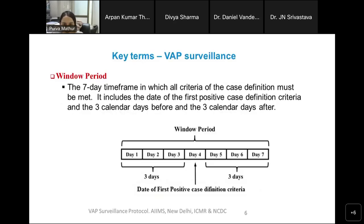We talked about the window period yesterday in all three modules. The window period is a seven-day timeframe in which all the criteria of the case definition must be met. It includes the date of the first positive case-defining criteria and the three calendar days before and three after. For VAP surveillance, we are building a window period around the first positive case-defining criteria, not necessarily the first positive diagnostic test. Any positive case-defining criteria and three calendar days before and after is how we build up the window period for VAP surveillance.